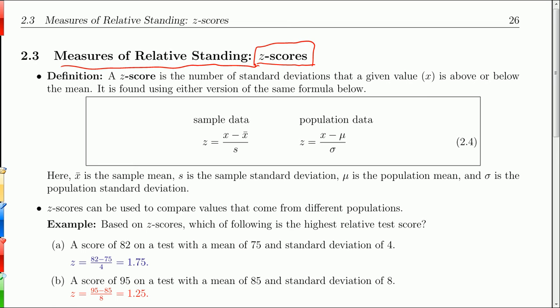If you have sample data, a z-score for a given value of x is x minus the mean over the standard deviation. In the sample data, x-bar is the mean and s is the standard deviation.